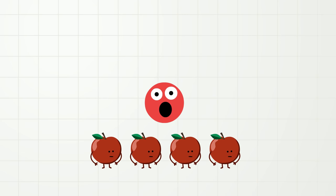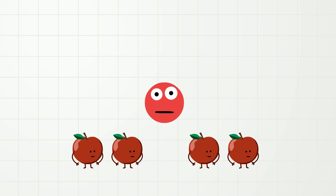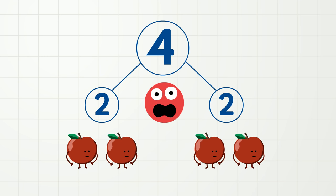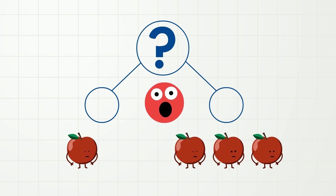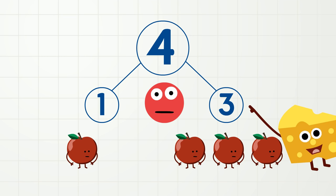I said apples! Look, we have one, two, three, four apples, and we can take them apart or they can move, so we have two apples here and two apples there, but we still have four apples. And what happens if one apple moves? Well, then we have one apple here and three apples there, but we still have four apples! Apples!